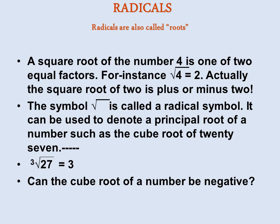Radicals, they're sometimes called roots. A square root of a number 4 is actually one of two equal factors. For instance, the square root of 4 is equal to 2. A radical, or square root, is the number which, when multiplied by itself, would give you the number 4.